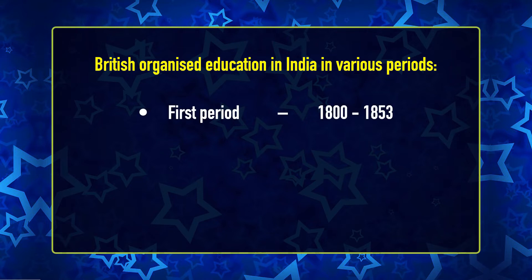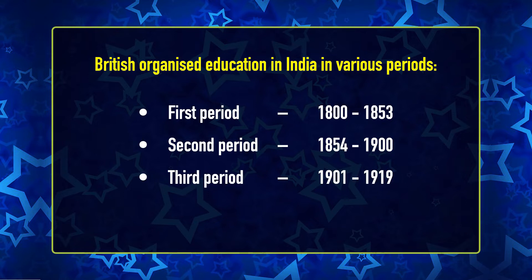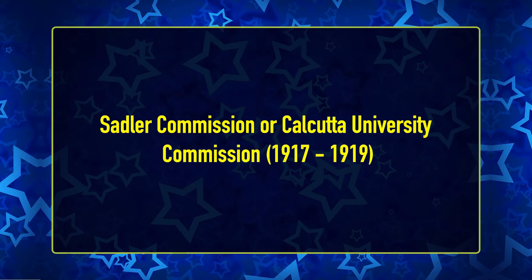The British organized education in India in various periods: the first period from 1800 to 1853, the second from 1854 to 1900, the third from 1901 to 1919, and the fourth from 1920 to 1947. This modern education system did not come into being abruptly, but was a result of gradual evolution. From time to time, various commissions were appointed for the growth and progress of English education in India. Today we are going to take up one such commission — the Sadler Commission or Calcutta University Education Commission, which dates from 1917 to 1919.